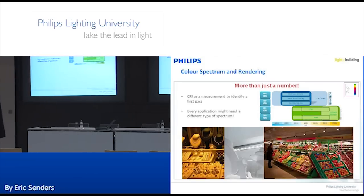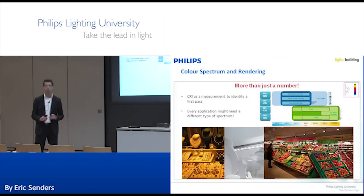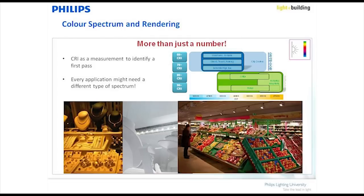CRI is currently the most used color rendering index, with a lot of discussion around a new CRI standard and a Color Quality Scale. The disadvantage of the current CRI is that it's measured on only eight R values. Saturated colors like R9 and R15 are not taken into account in the CRI value, so there are discussions about how to improve the quantitative measure so it truly reflects the right color — since the spectrum of fluorescent is completely different from incandescent or LEDs.